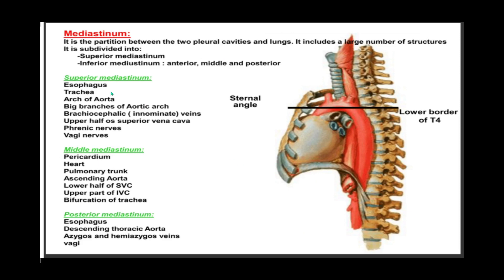To summarize: the mediastinum is a partition between the two pleural cavities and the lungs, includes a large number of structures, and is divided by an imaginary line into a superior and an inferior mediastinum. The inferior mediastinum is further divided into an anterior, a middle, and a posterior mediastinal cavity. The superior mediastinum houses part of the esophagus, part of the trachea, and the arch of the aorta.